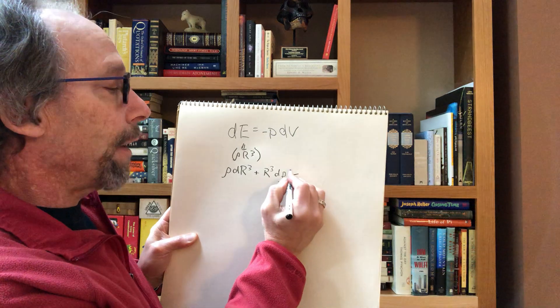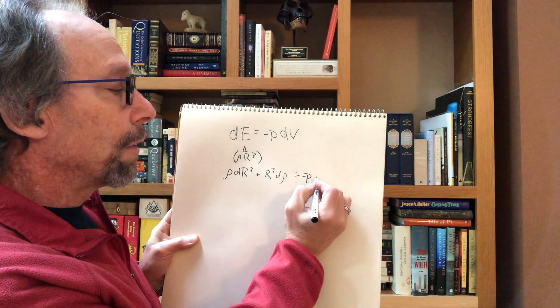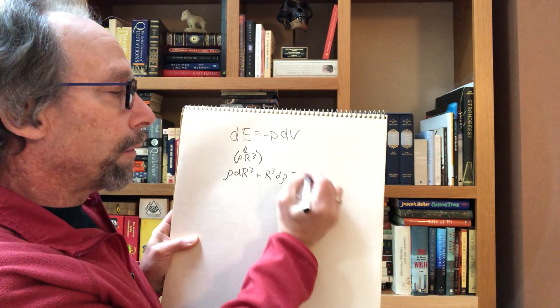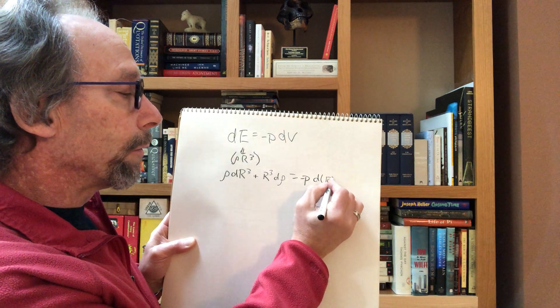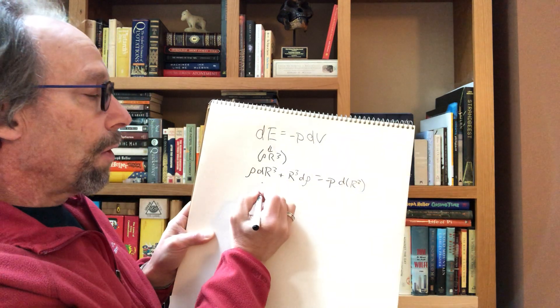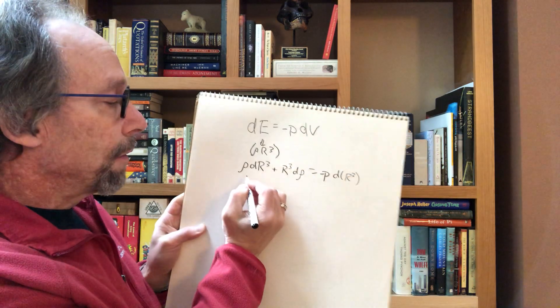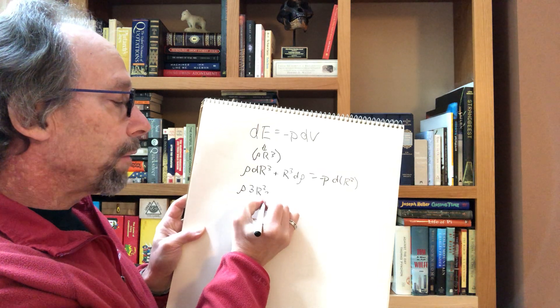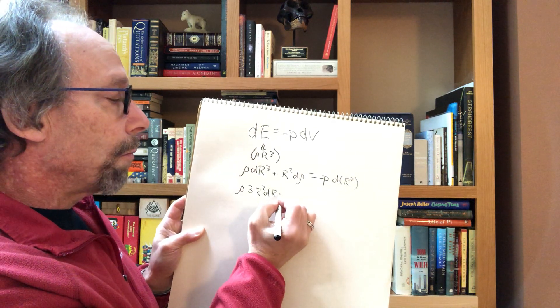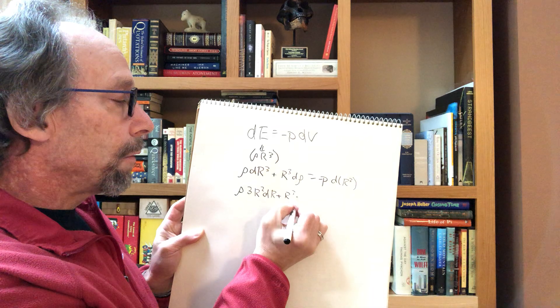And then the right-hand side is minus the pressure times the derivative of r cubed. Now, what's the derivative of r cubed? It's quite simple: it's 3r squared dr plus r cubed d rho.